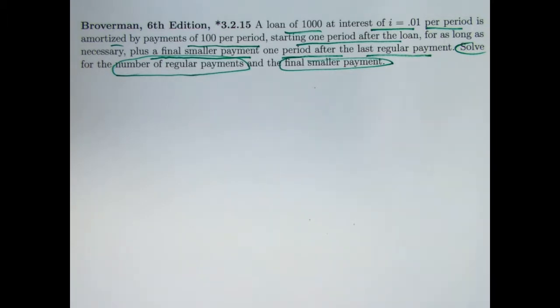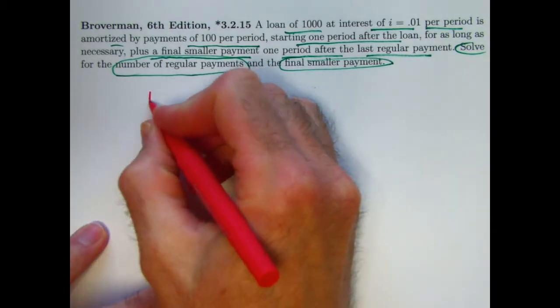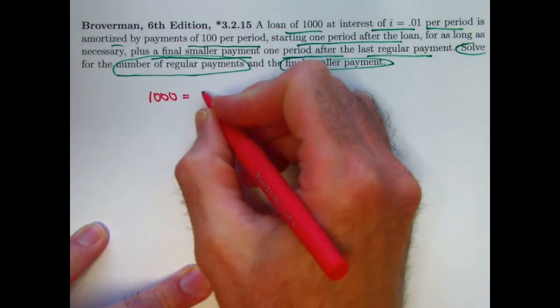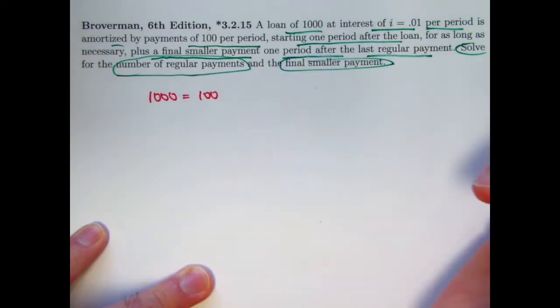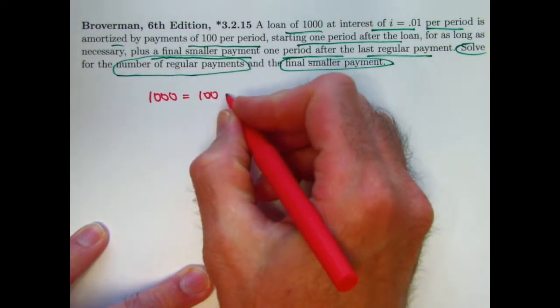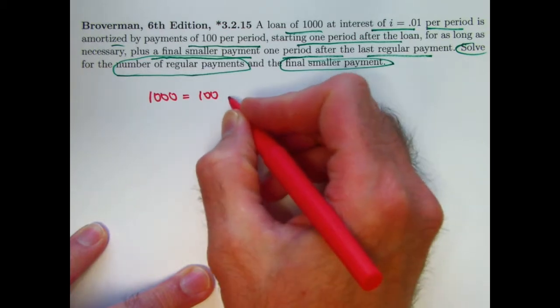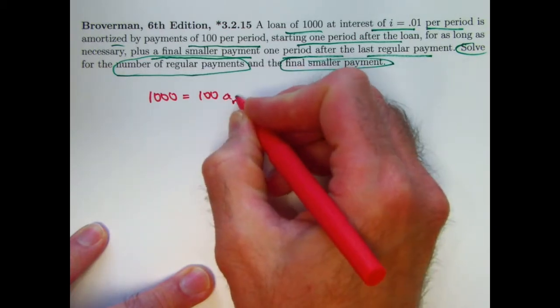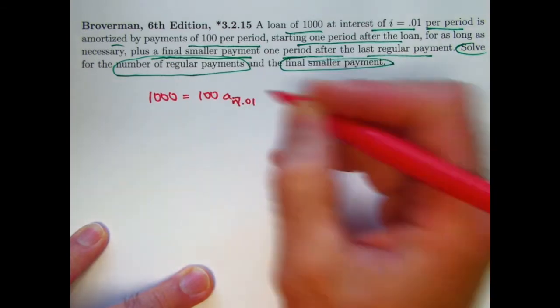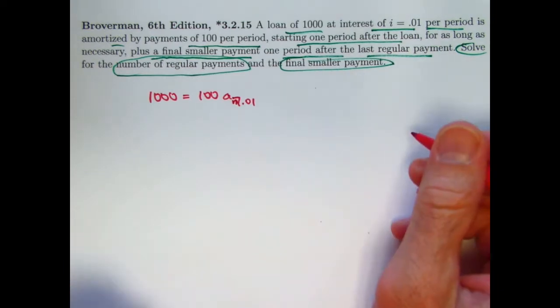What we could do to solve this is pretend we're thinking of it as an ordinary amortized loan. We've got the amount of the loan 1000, the amount of the regular payments 100, and pretend we don't have a final smaller payment. Let's pretend all our payments are 100 and multiply that, because it's annuity immediate, by a sub n where n is the number of payments with the given interest rate 0.01. We don't know what n is, we need to solve for n.